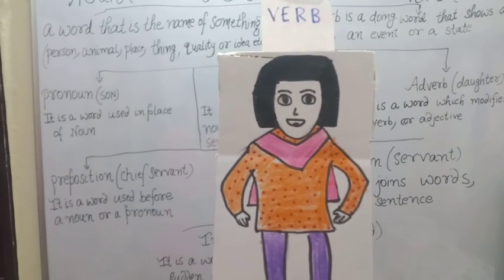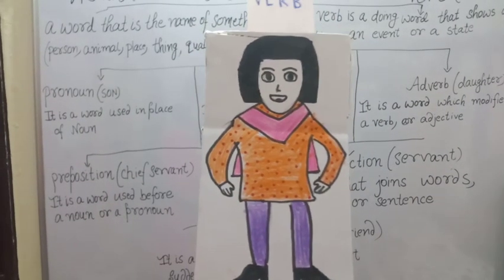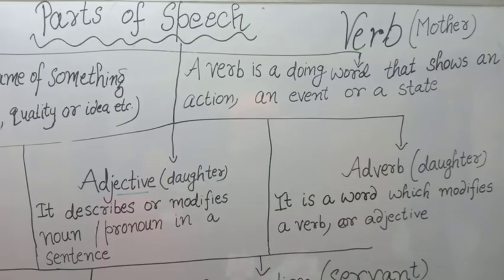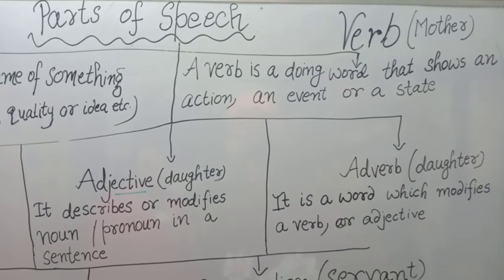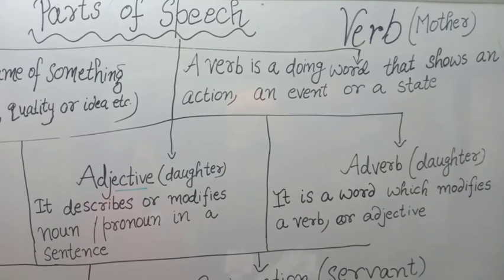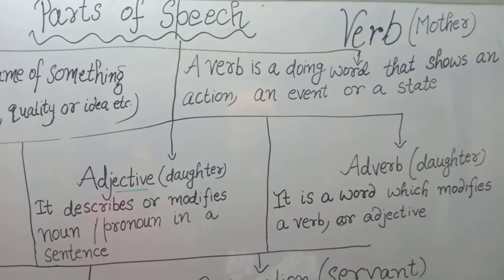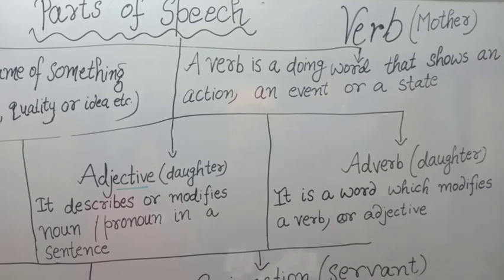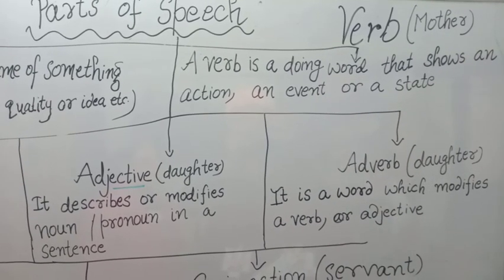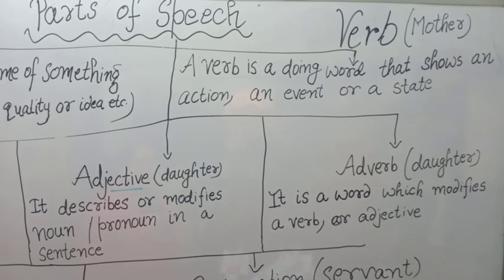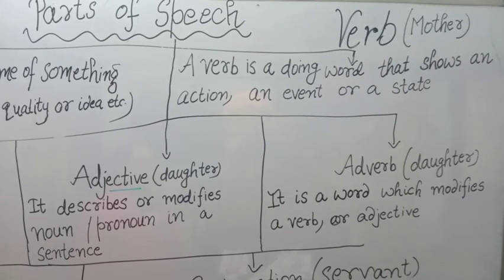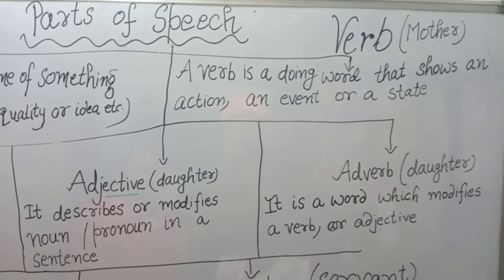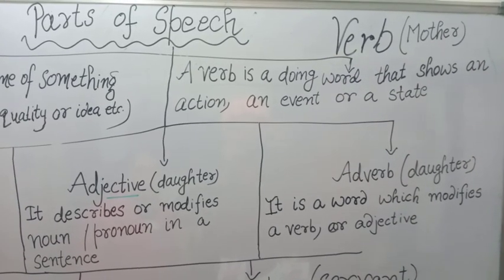I am Mrs. Verb. I always keep on doing one or the other thing. I am always in action. You know, children, who does most of the work in your family? That is your mother — your mother is always in action. Sometimes she is doing some cooking job, sometimes she is doing the cleaning task. So she is always busy. This is what Mrs. Verb also does. That is the definition of verb.